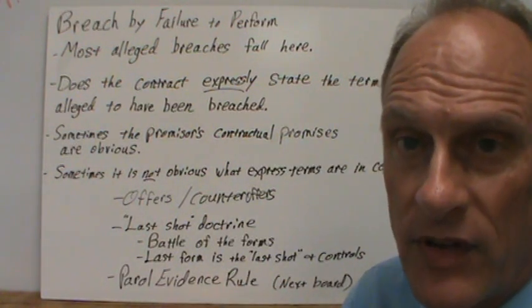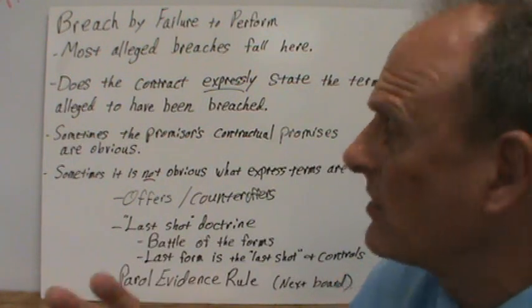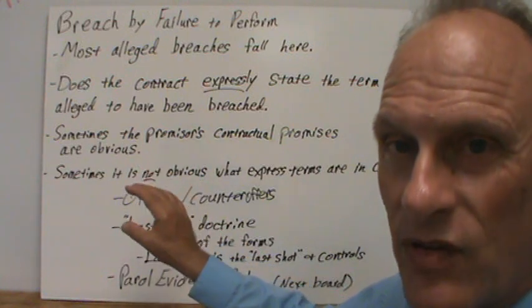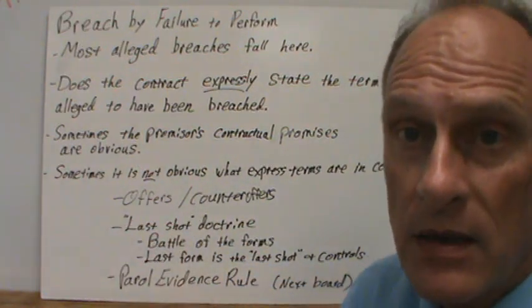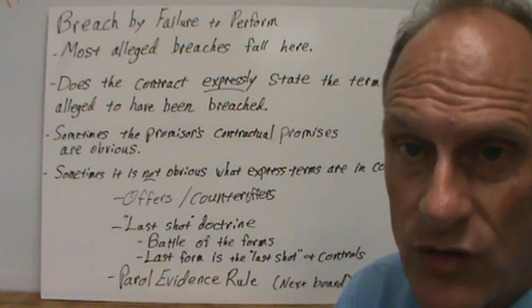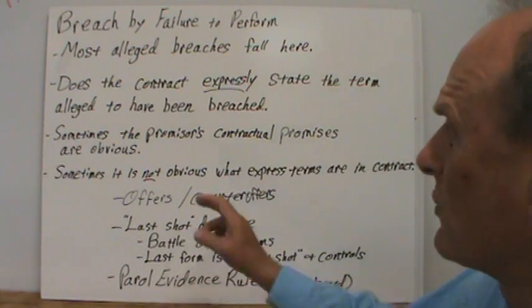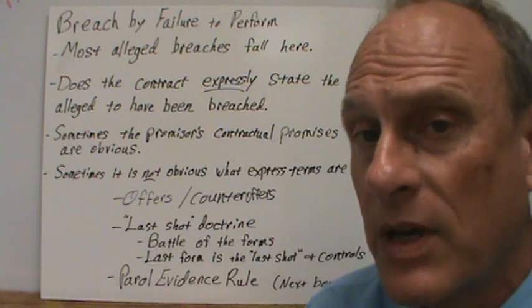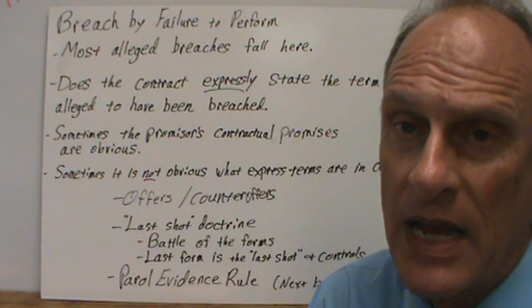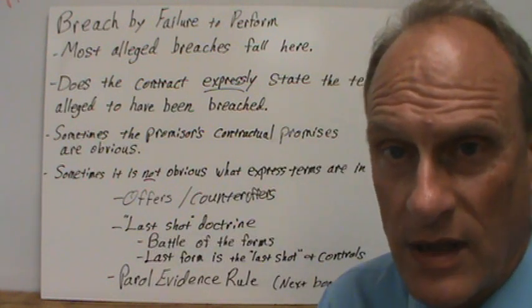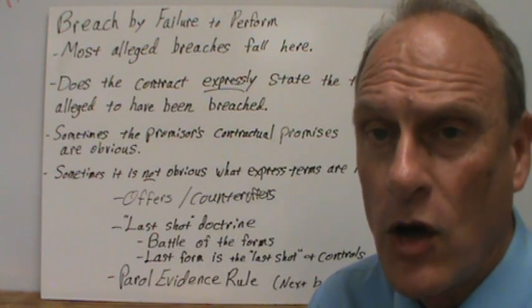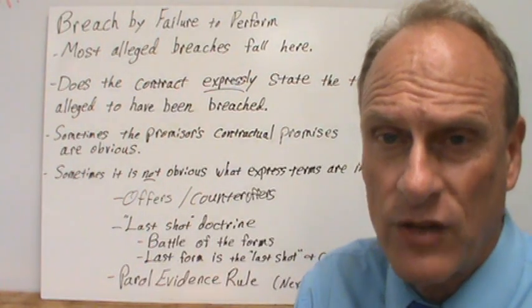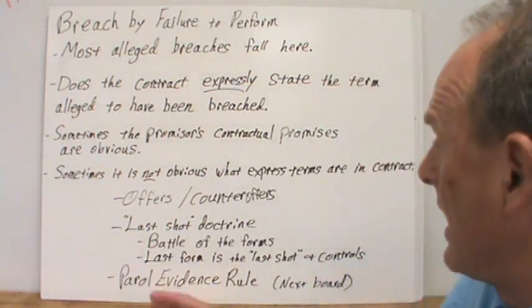When the plaintiff says 'you've breached the contract,' we search for the express term. A lot of times it's very obvious — like failure to pay. If the contract says you're going to pay this much and you don't, that's an obvious express term. But sometimes it's not so obvious, because of the exchange of offers, counteroffers, rejections, and new counteroffers. After all that negotiation, you have to step back and ask: what terms did we finally agree on? What's actually in the contract?